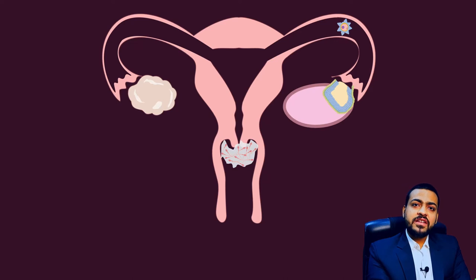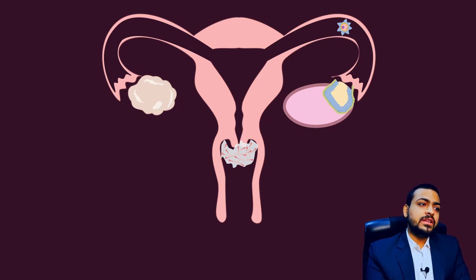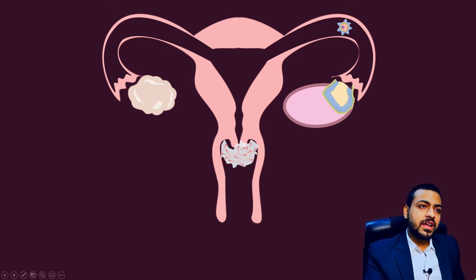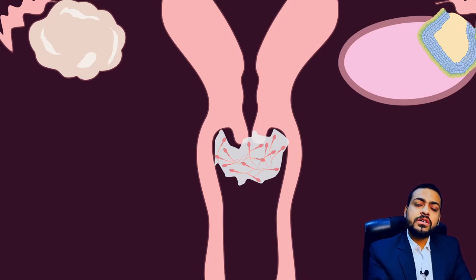Why is the vagina acidic? It is acidic in order to prevent it from germs, from pathogens. Vagina is acidic but these sperms cannot tolerate the acidic environment for long. Interestingly, these sperms are provided with seminal fluid, and the seminal fluid is slightly alkaline. This alkaline seminal fluid can buffer that acid temporarily for about 10 to 15 minutes.